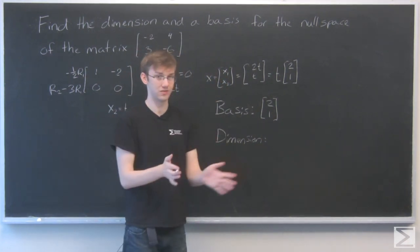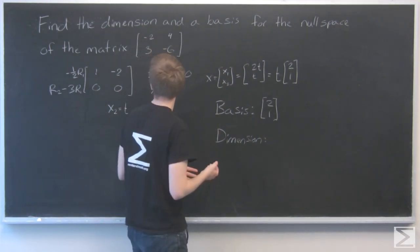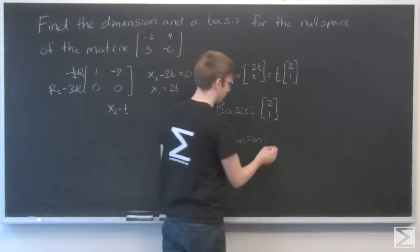Therefore, how many different directions is your null space going to be? So because there's only one vector, my dimension is 1.